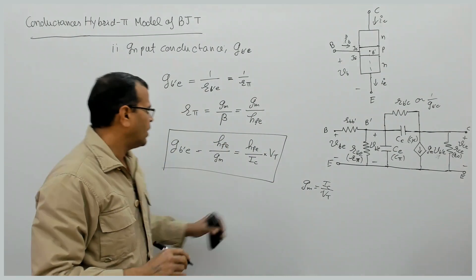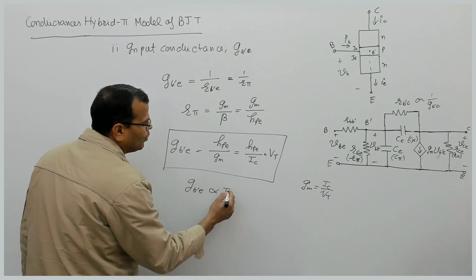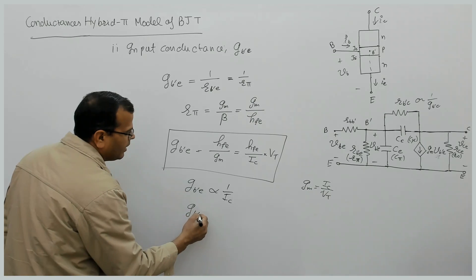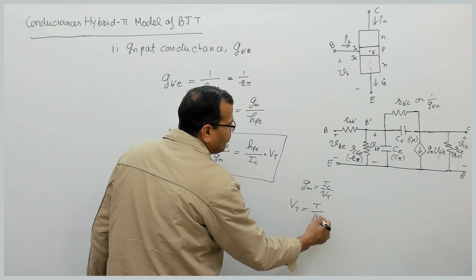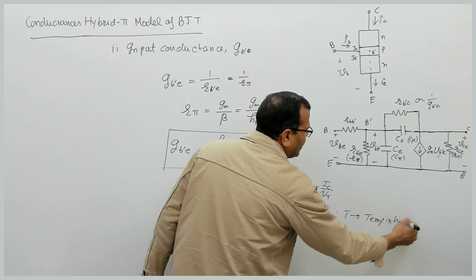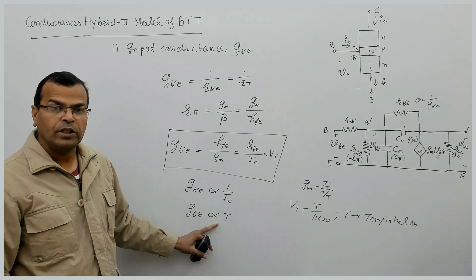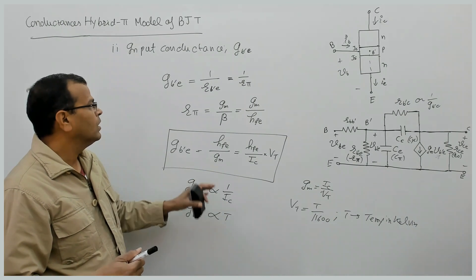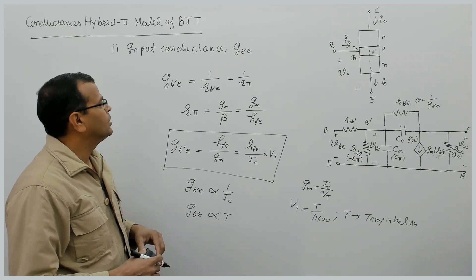What I find is that input conductance of BJT is inversely proportional to collector current and directly proportional to temperature. Because VT is T by 11600, where T is temperature in Kelvin. So my input conductance is directly proportional to temperature — it increases with increase in temperature — and it is inversely proportional to collector current. This is how the conductance will change.